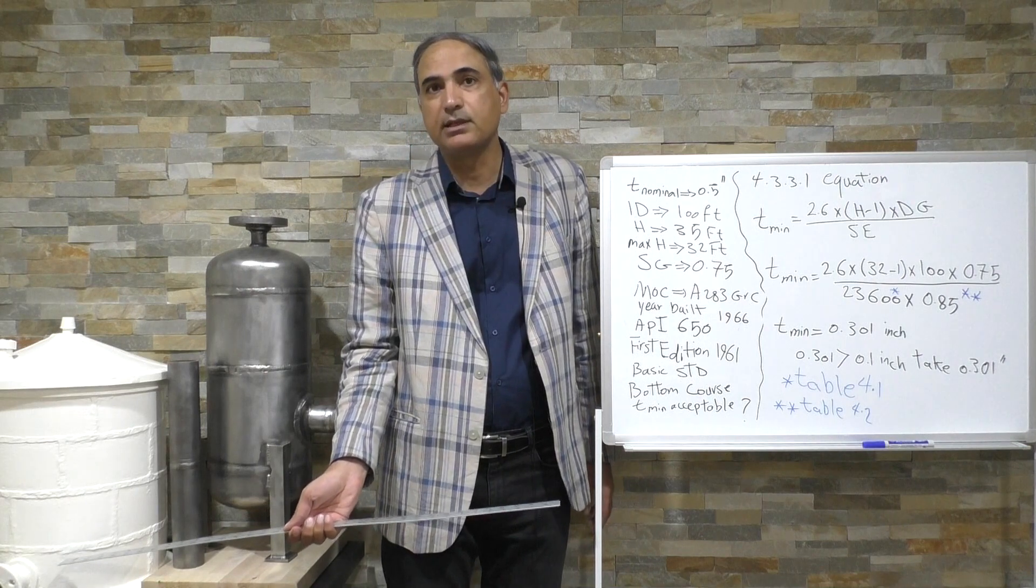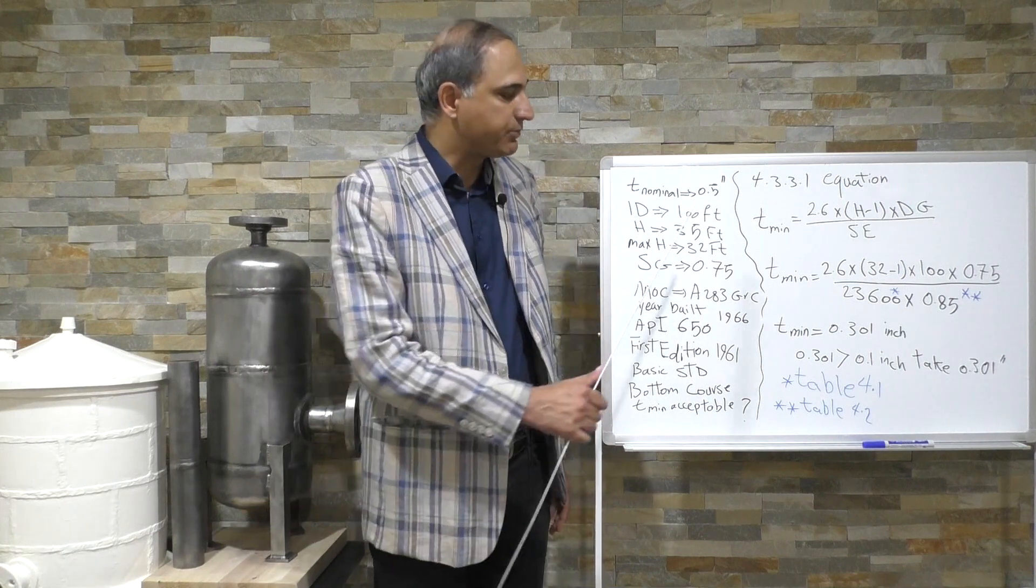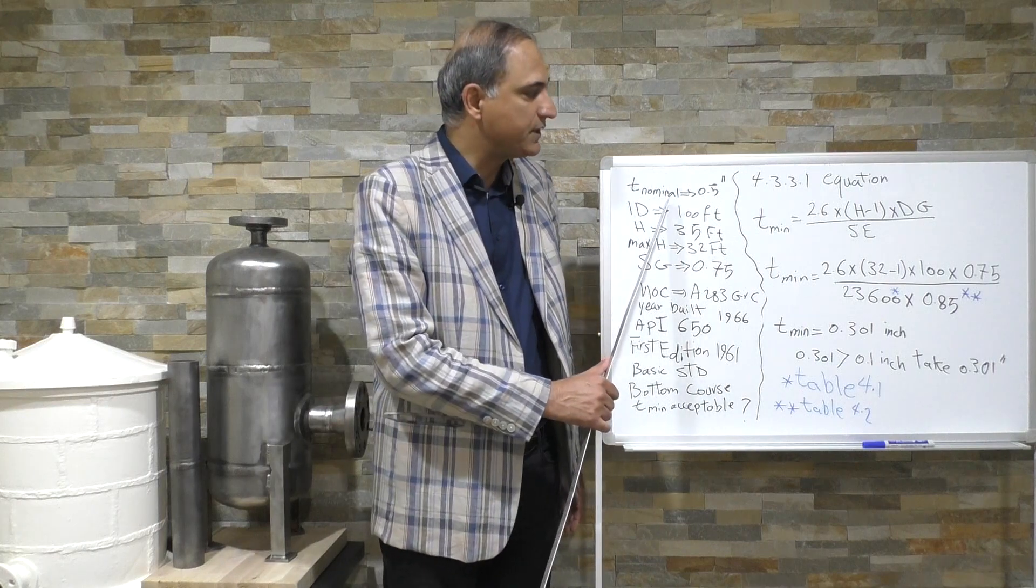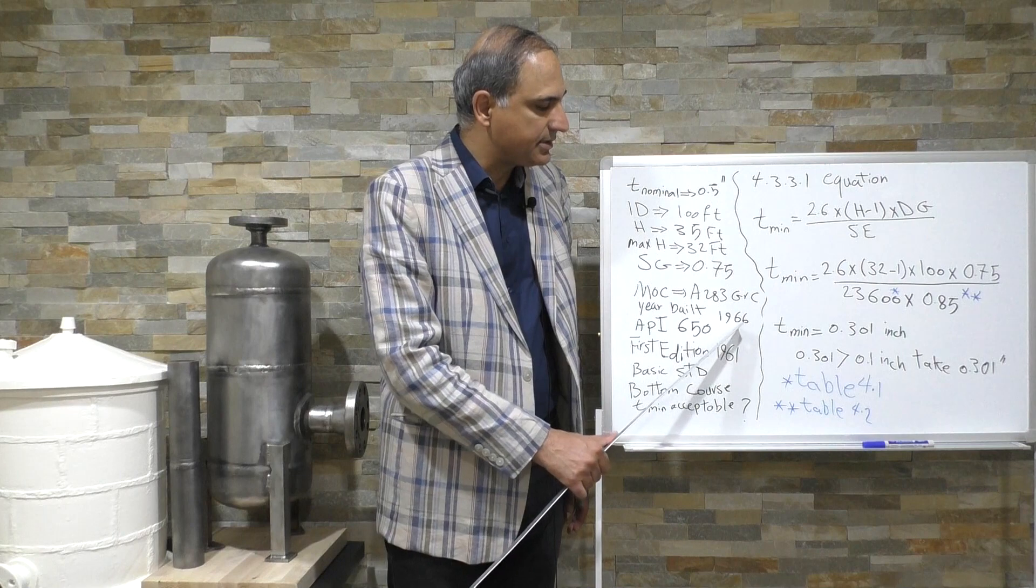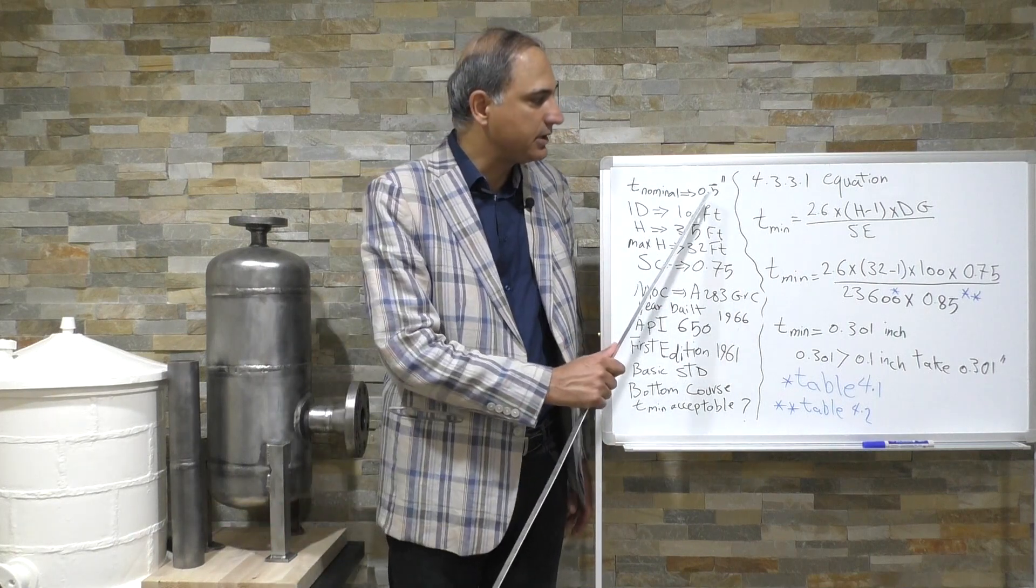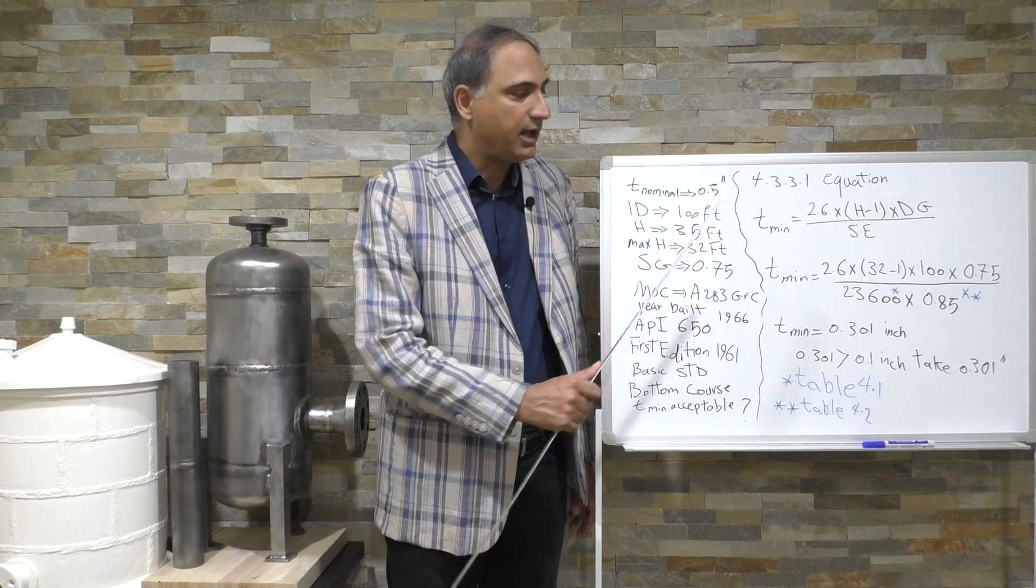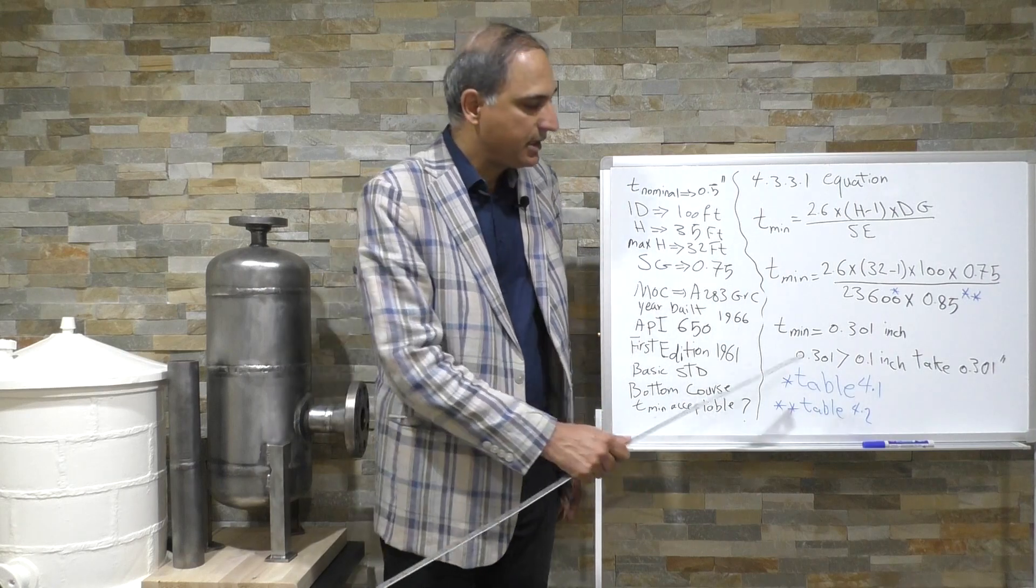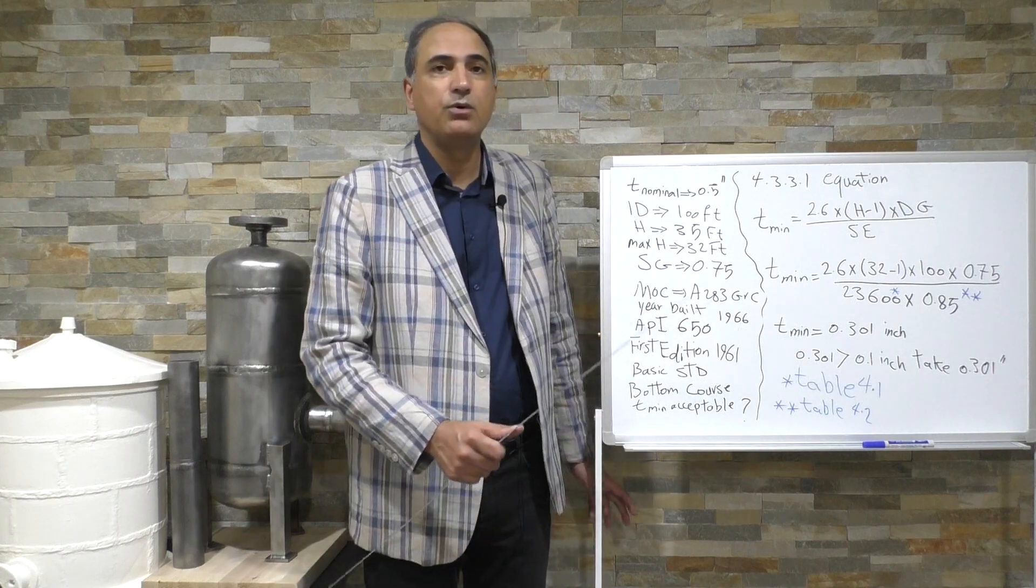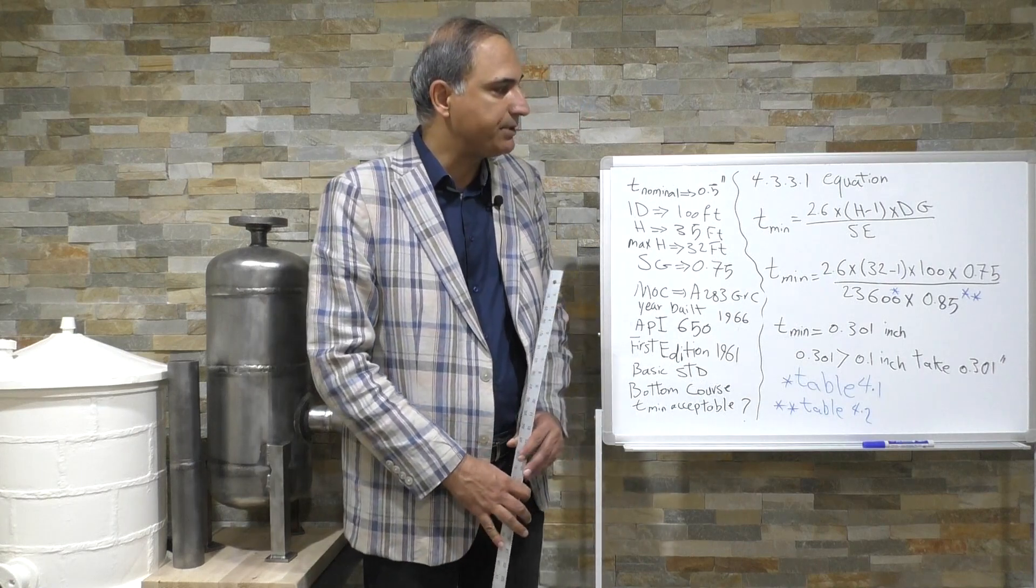If you see the nominal thickness is 0.5 inch and this is our minimum acceptable thickness. Nothing we mentioned about the actual thickness. The problem doesn't say anything about the actual thickness so we don't know at this time what is the thickness because the problem has no information about the actual thickness. We know the first day back in 1966 when this storage tank went into service the wall thickness was 0.5 and we know from the first day that it shouldn't go below 0.301.